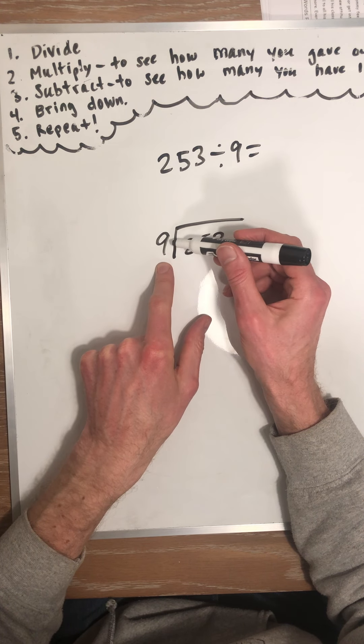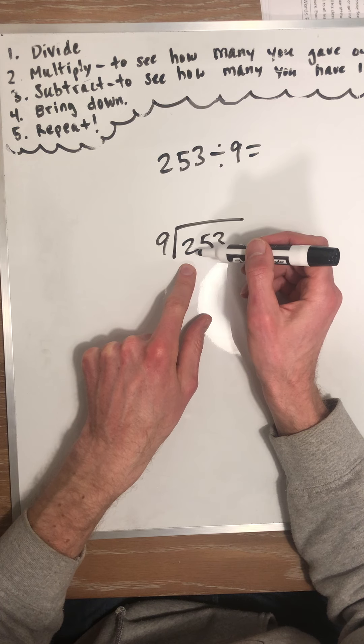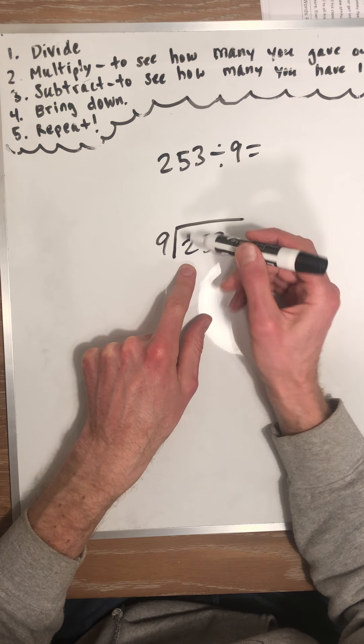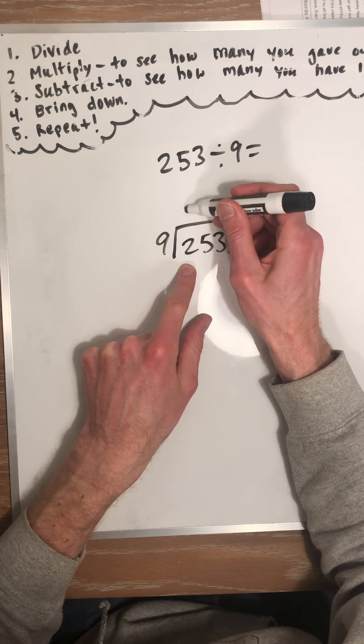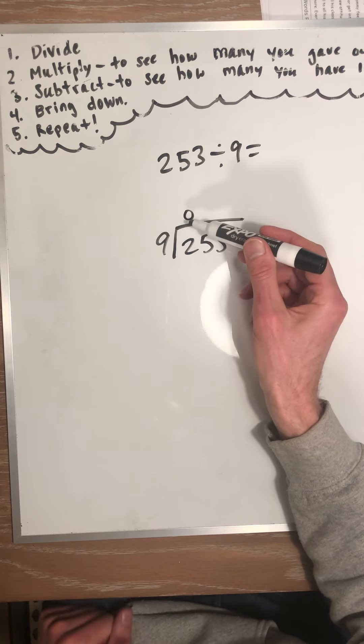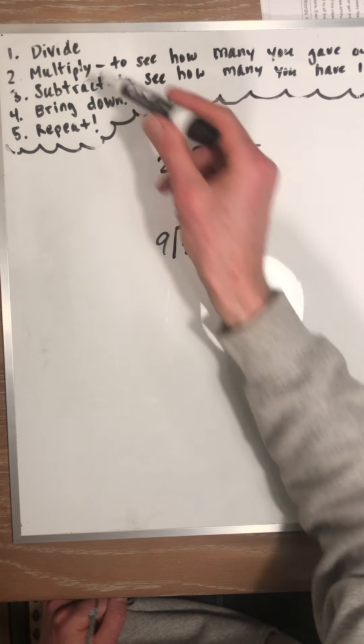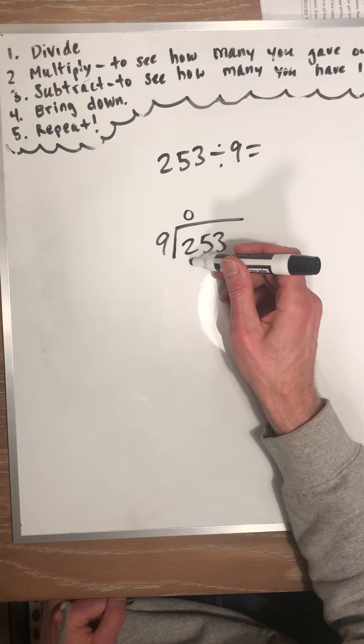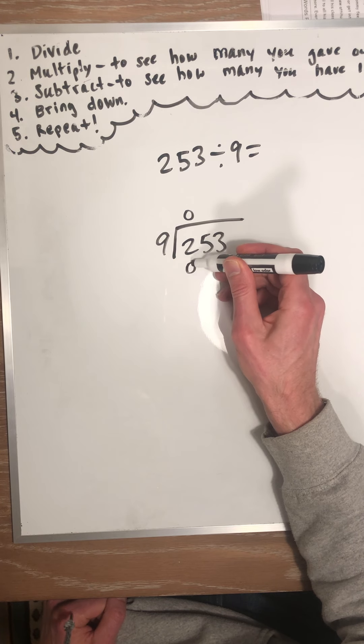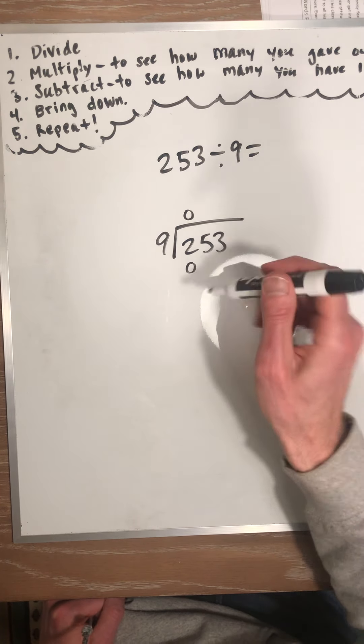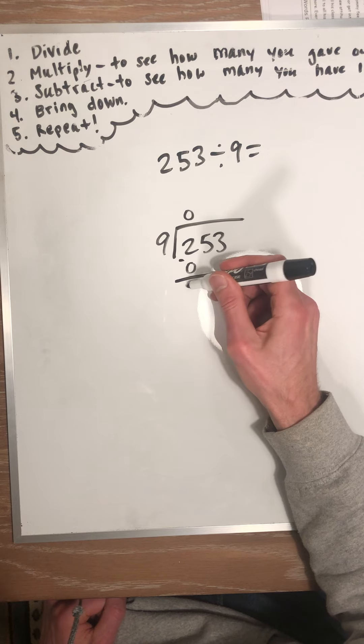So, 9 times what equals 2, or how many 9s fit into 2? Well, 0. Can't do it. So, now we multiply. 0 times 9 is 0. We multiply to see how many we gave out. So we haven't given out any pancakes yet. Subtract to see how many we have left. We still have all 200 of them.